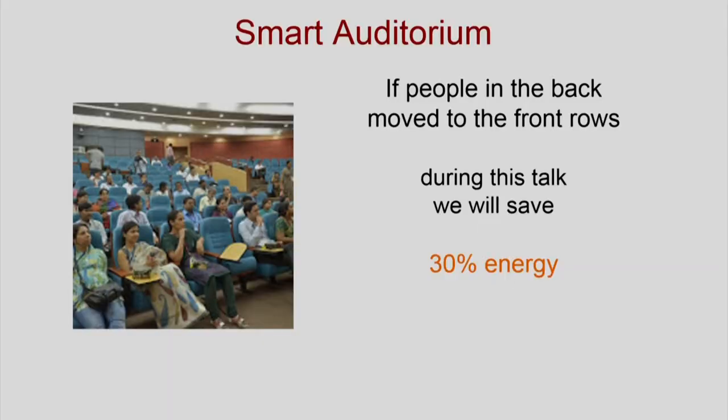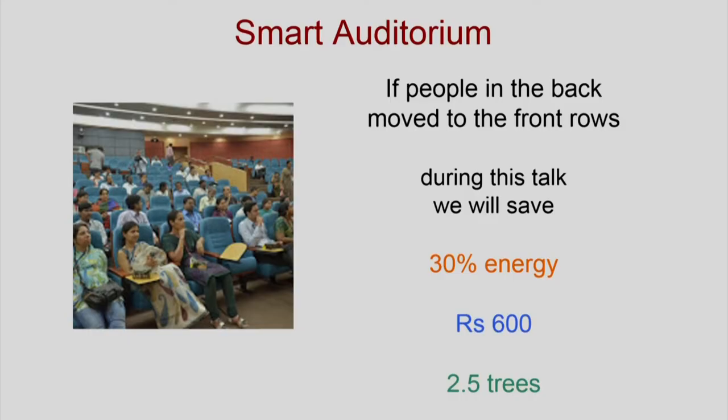A smart auditorium might tell people who are in the back to move to the front rows. Why? Because people in the back do not need light and the air conditioning can be adjusted, saving energy. It might conclude that if all people moved forward, 30 percent energy could be saved — or equivalently, a reduction of 600 rupees in the energy bill, or that the energy from fossil fuels would contribute to the loss of 2.5 trees. These are equivalent savings expressed in different dimensions.